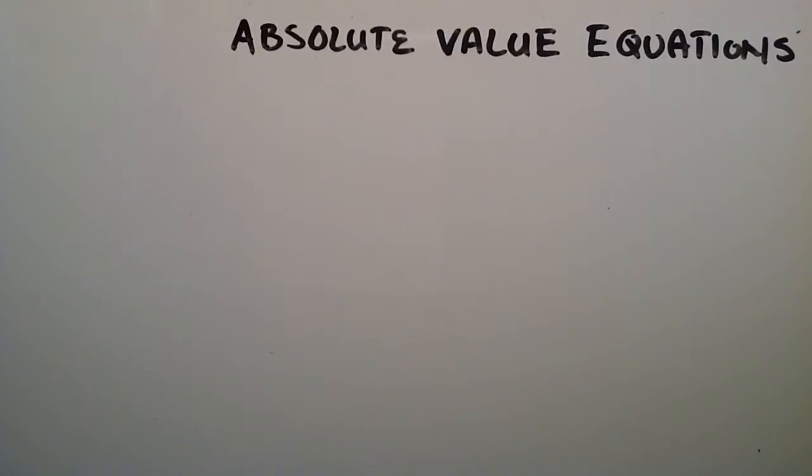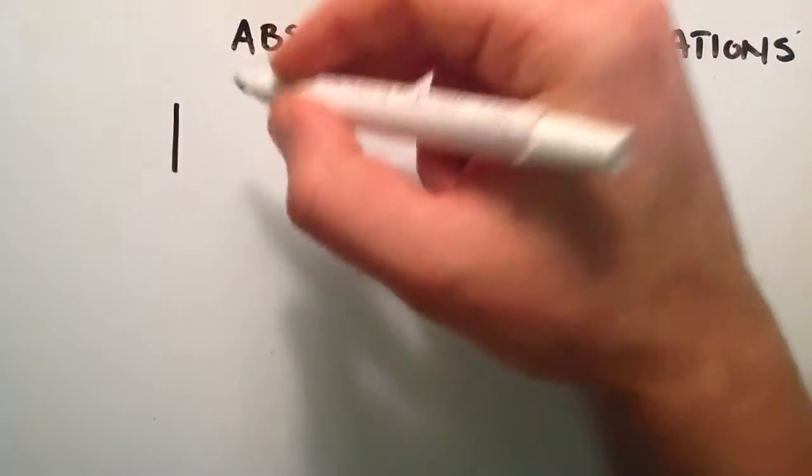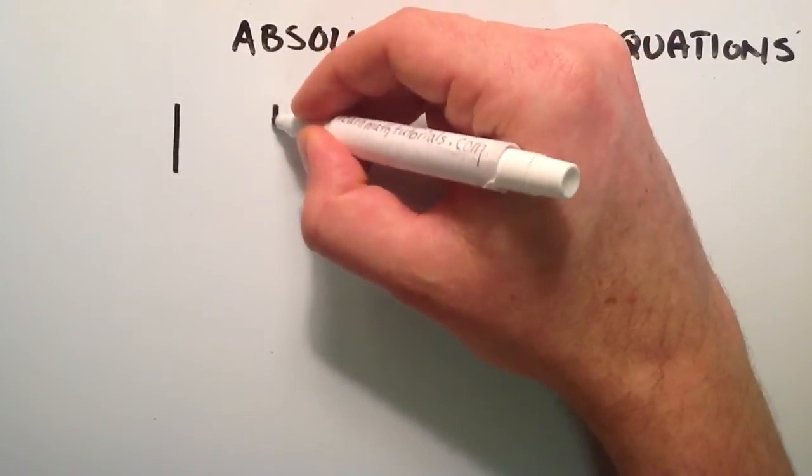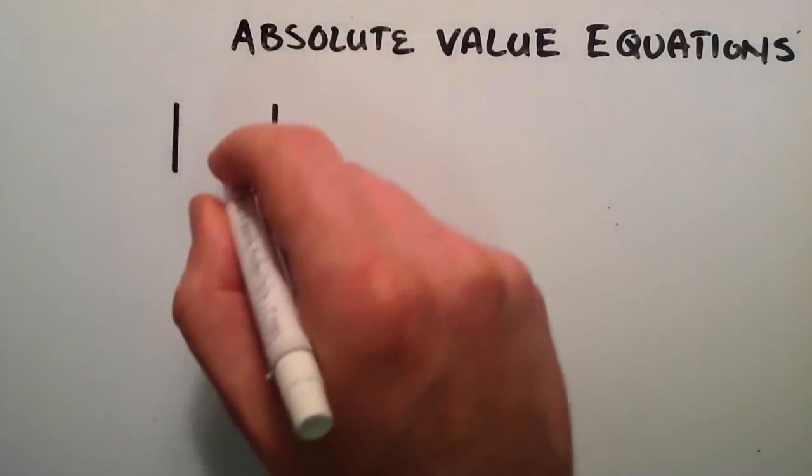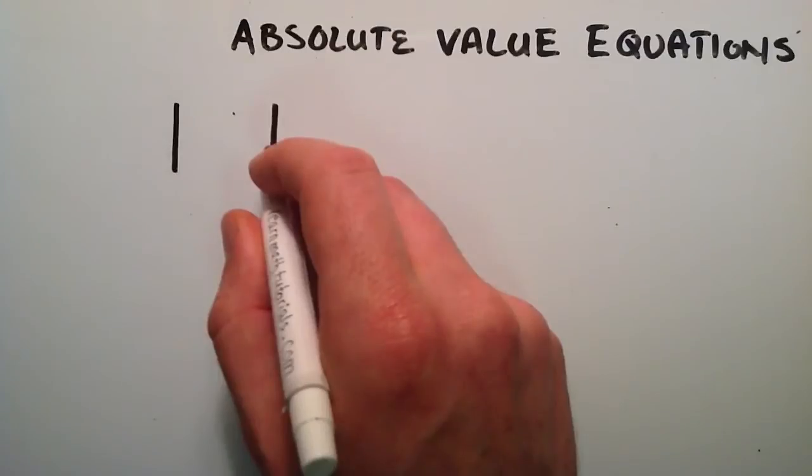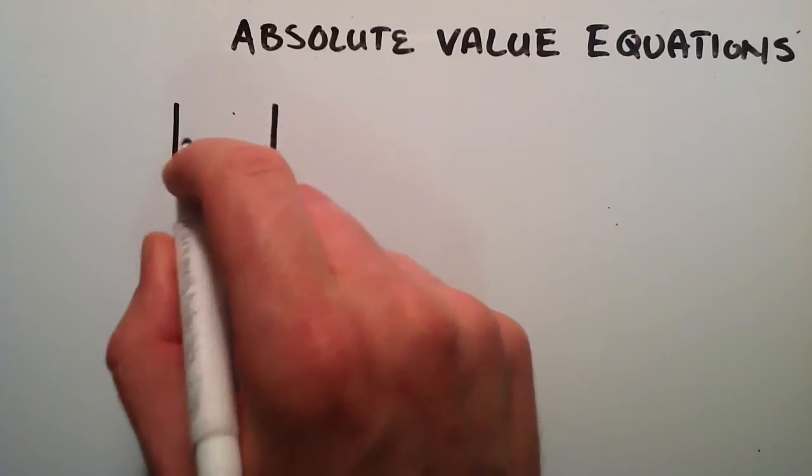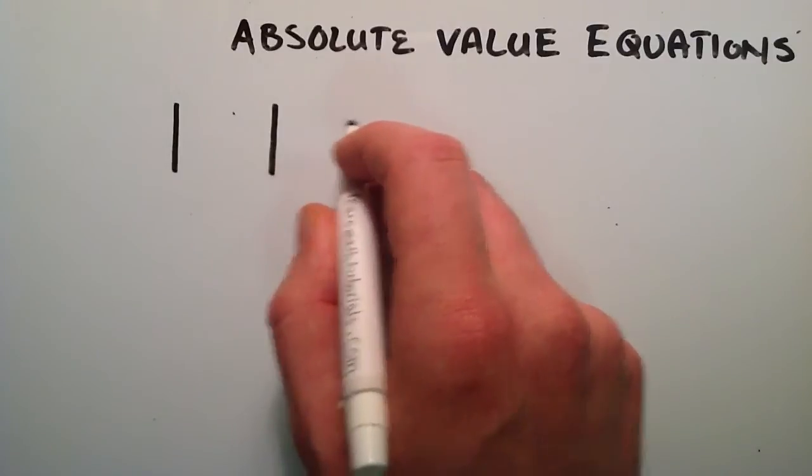If you don't already know what an absolute value is, I'll go ahead and go over that really quickly. An absolute value is basically, we have two absolute value bars to denote an absolute value, and then we have some sort of information inside of these bars. What the bars do is they just make sure that whatever is in here is represented as something that is positive.